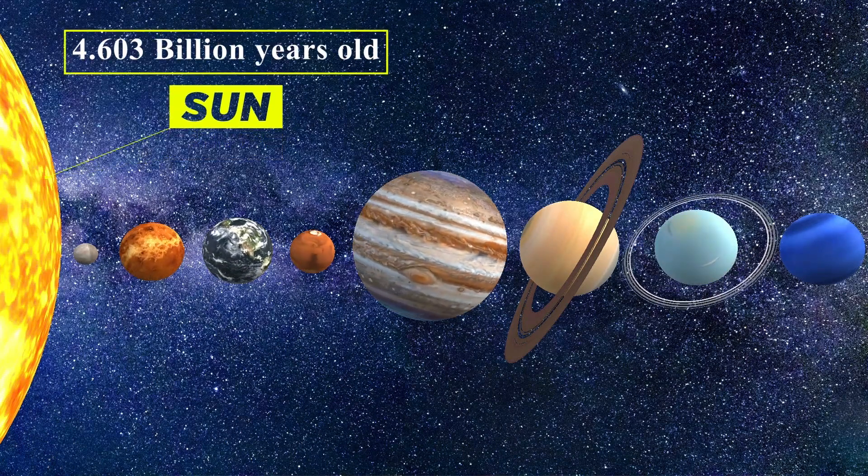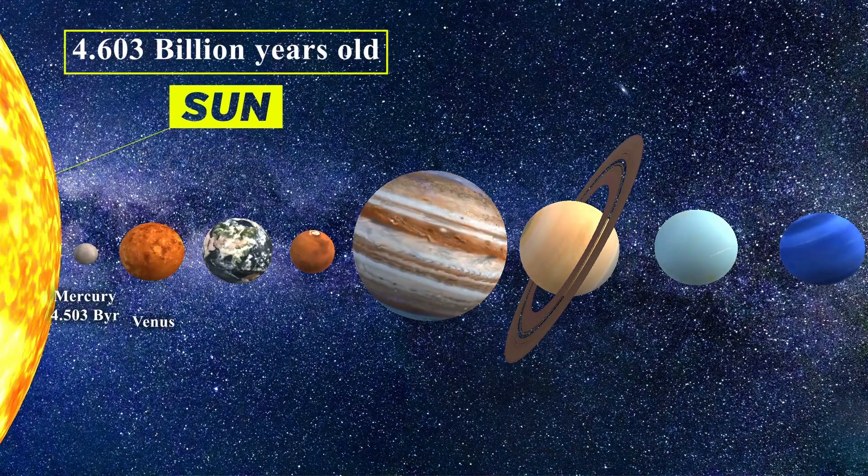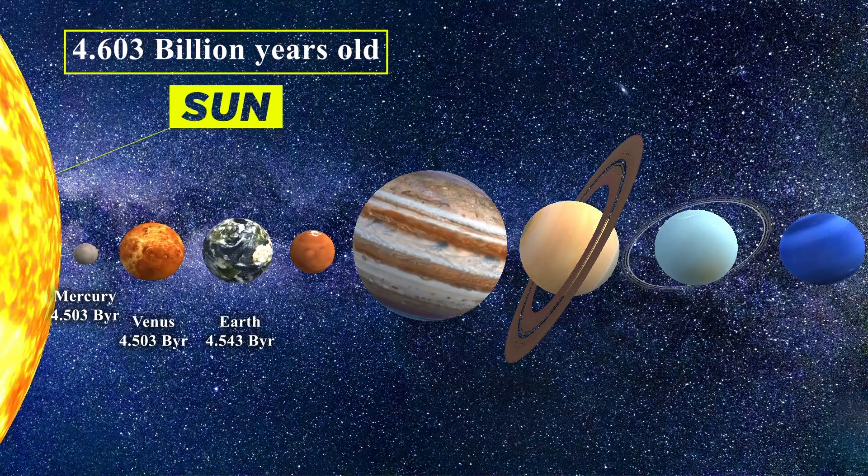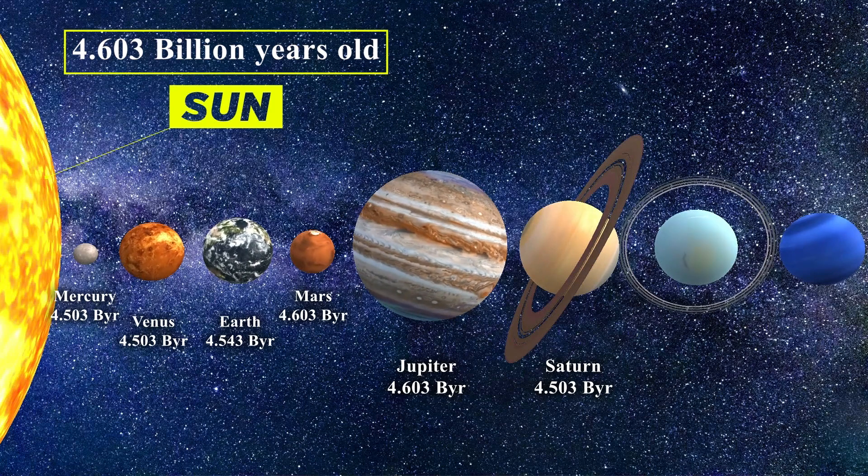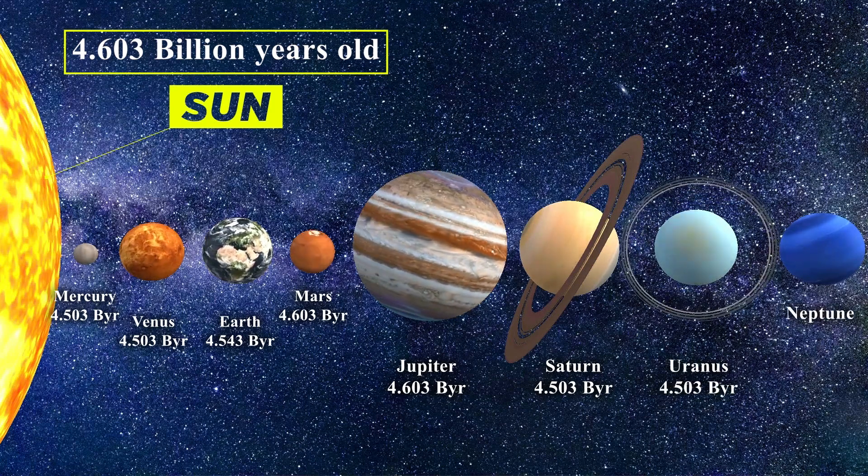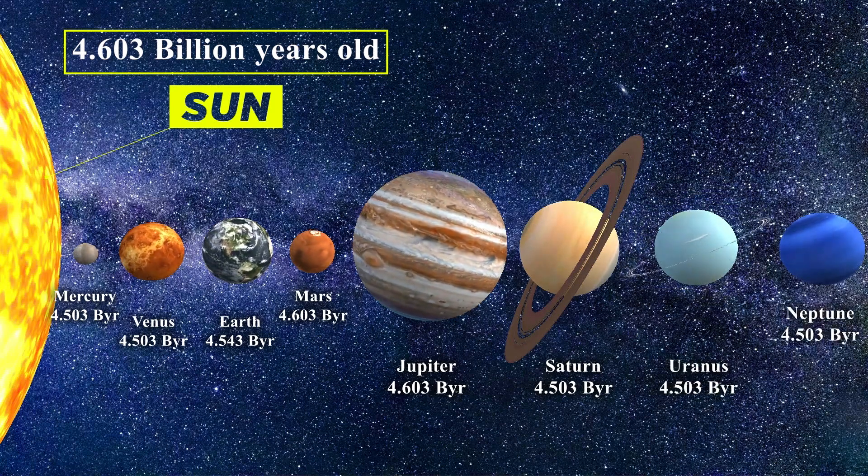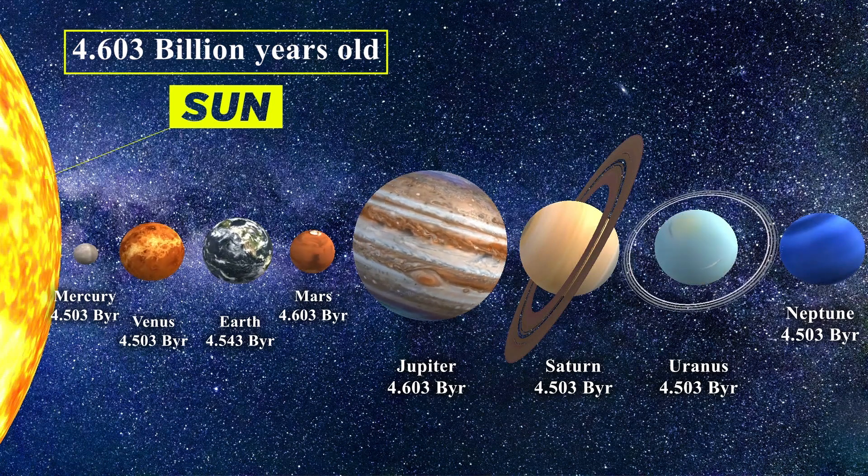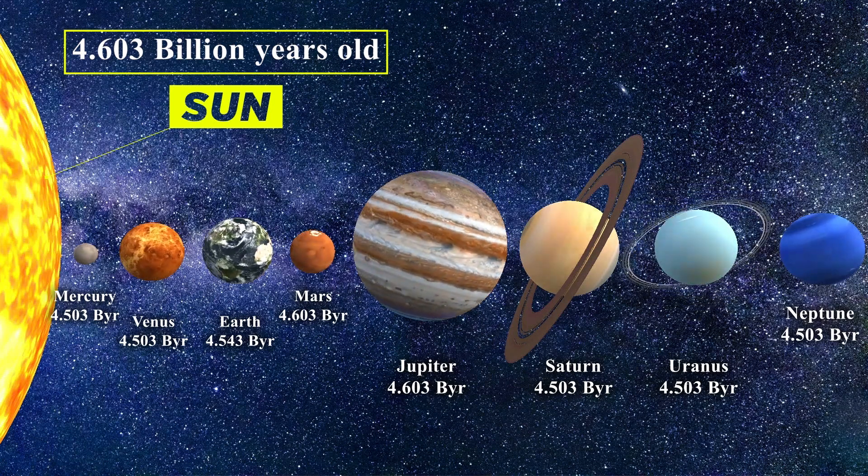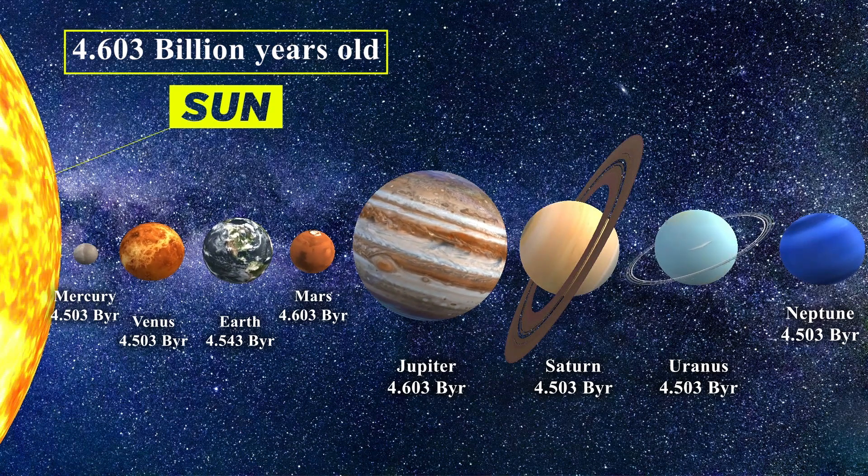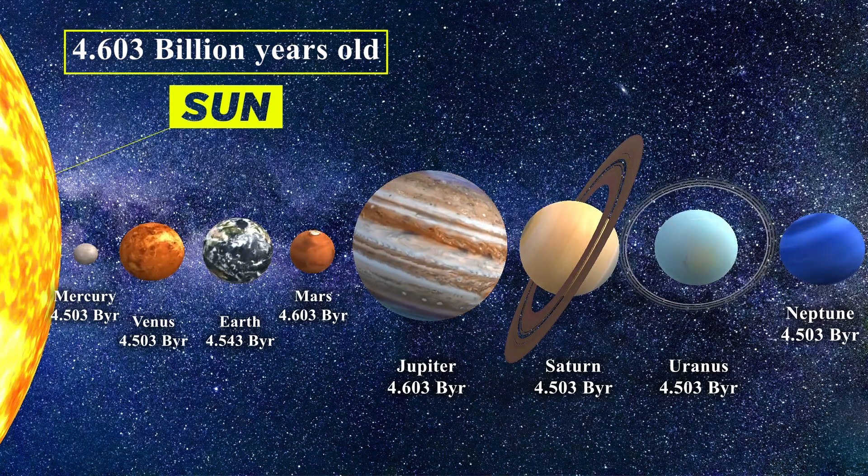If we pay attention to the lifespan of a solar system, which includes a central star and planets orbiting around it, we find that the central star's lifespan is always about 500 million to 1 billion years longer than its planets. Therefore, it can be said that at first, the star is born, it grows and reaches its maturity, then the planets of that system are formed.